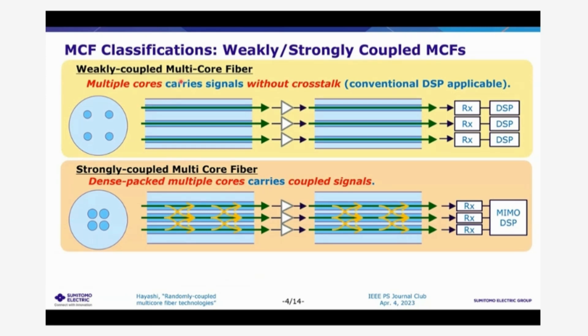So multicore fibers can be divided into two types. One is weakly coupled multicore fiber and another is strongly coupled multicore fibers. In the weakly coupled multicore fibers, the crosstalk between the cores is well suppressed. So we can use each core as an isolated individual single waveguide, and so we can use conventional transceiver technologies.